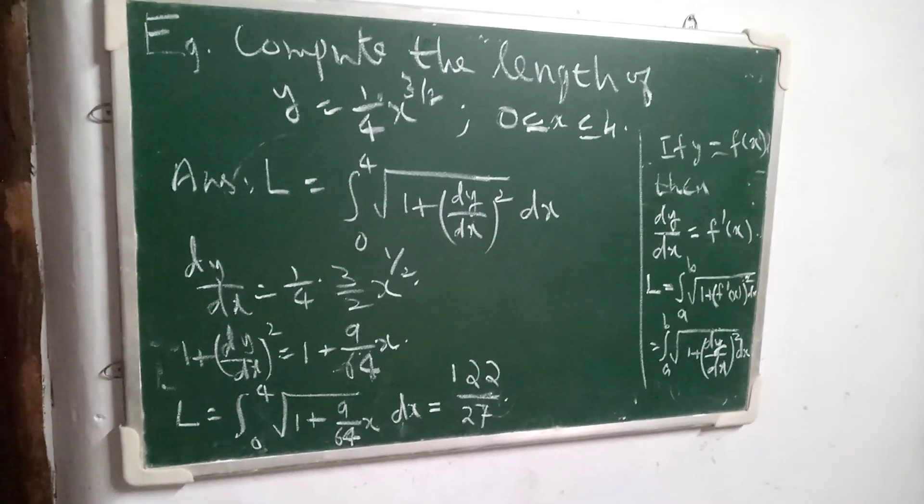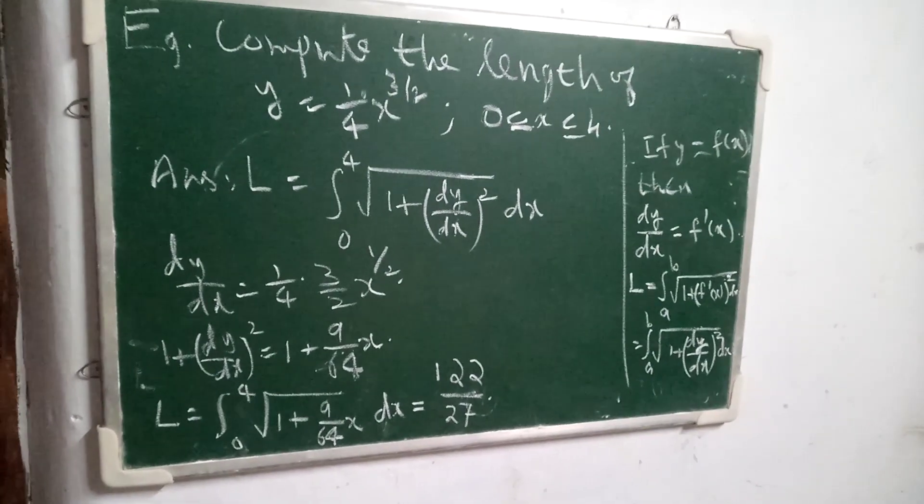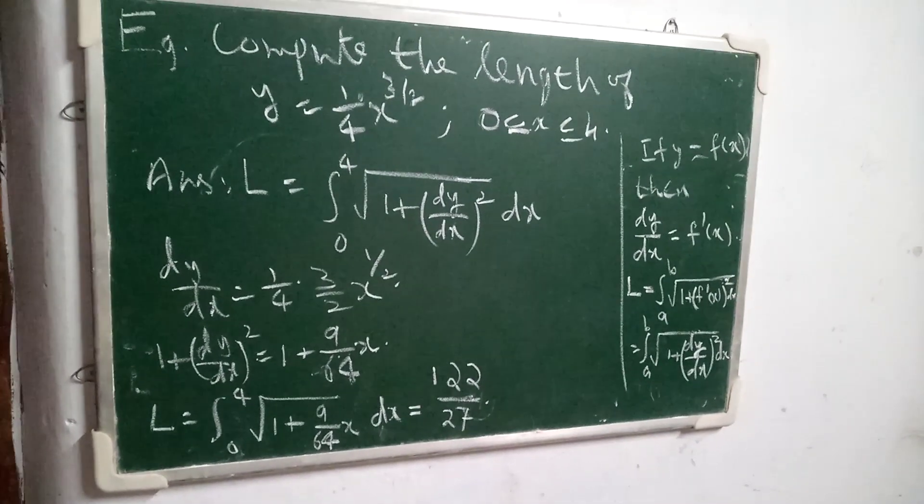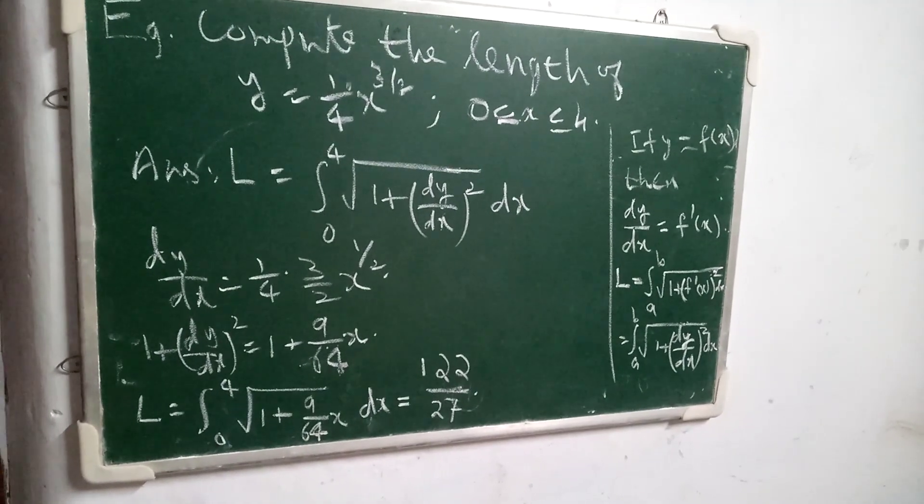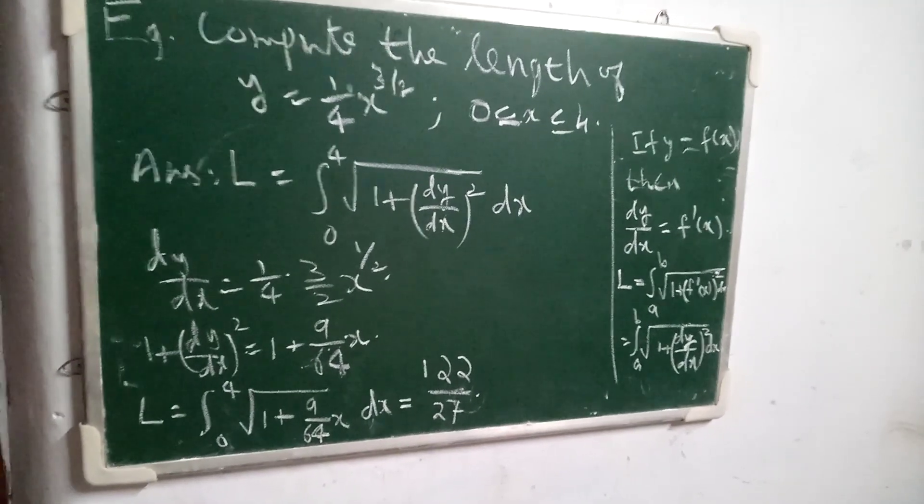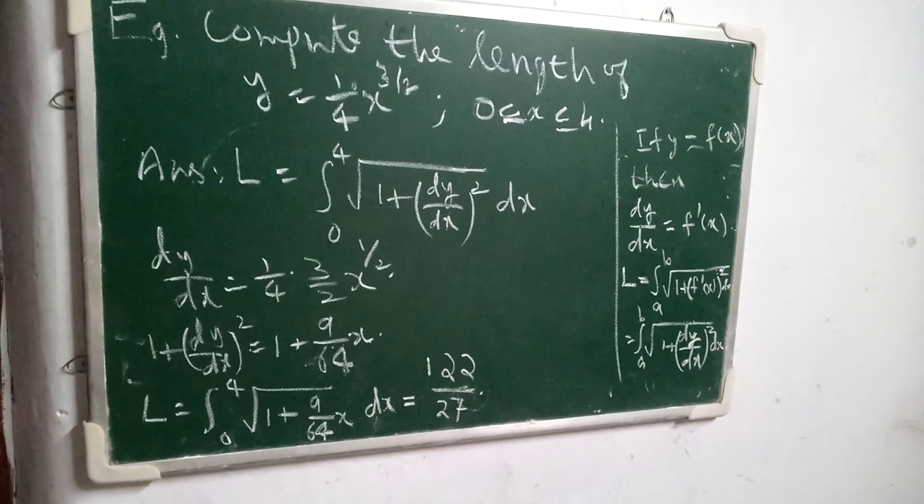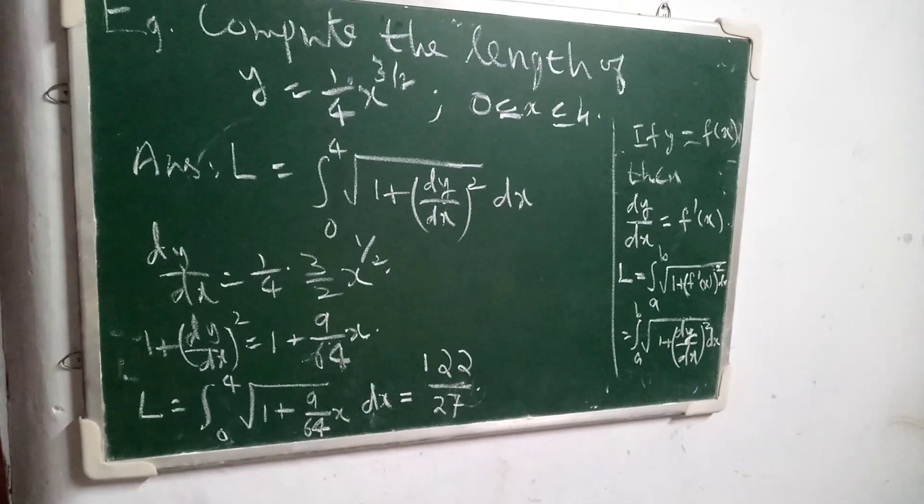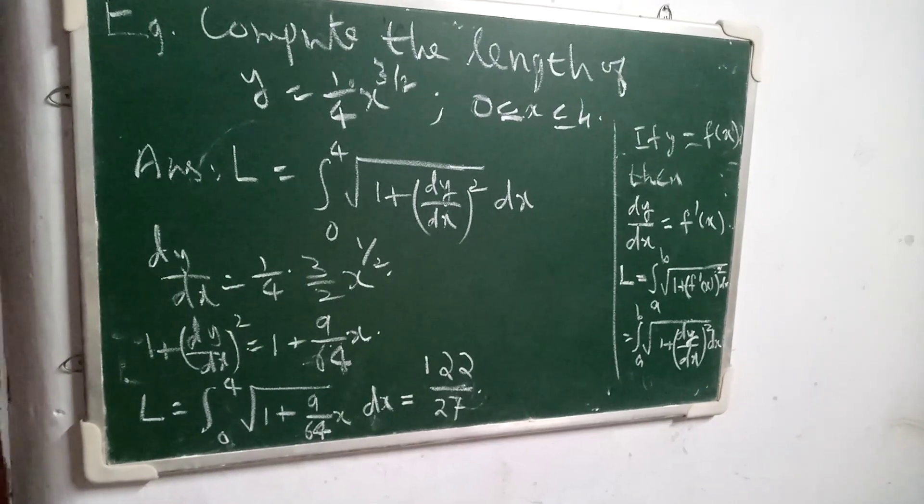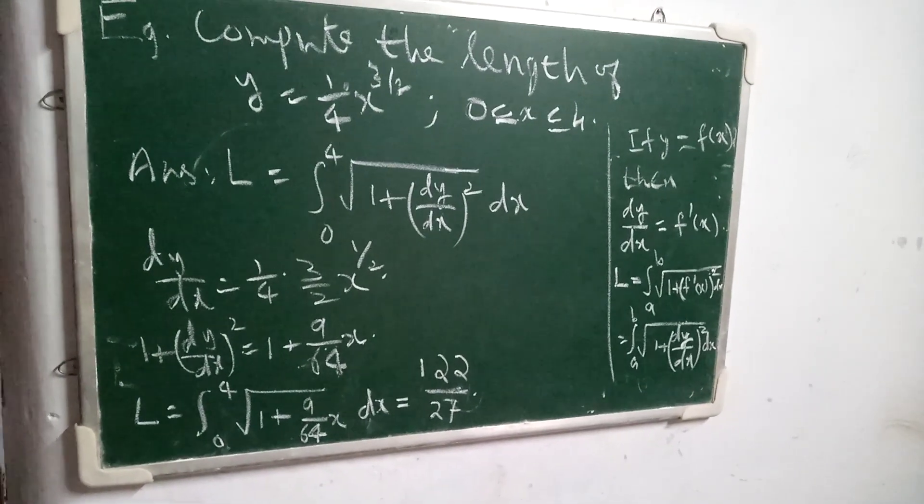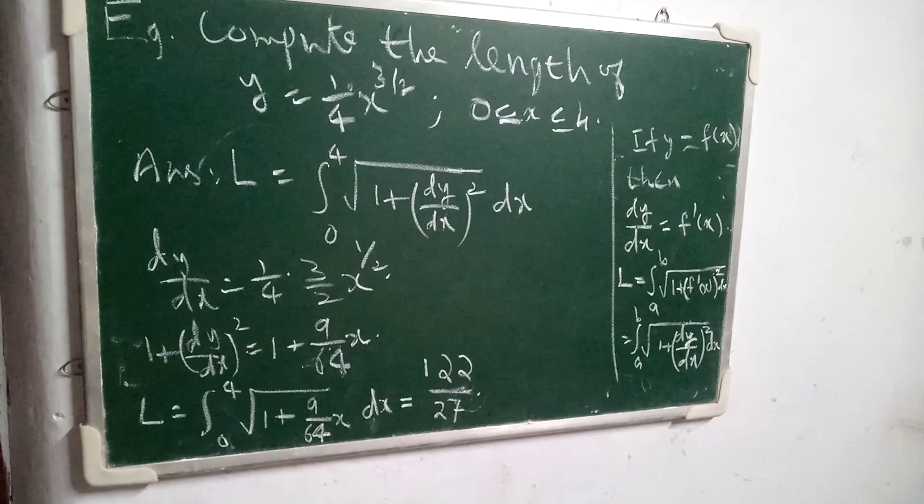Remember what is the length of the curve formula: L is equal to integral a to b square root of 1 plus f dash x whole square dx. But if y is equal to f of x, then dy by dx is f dash x.